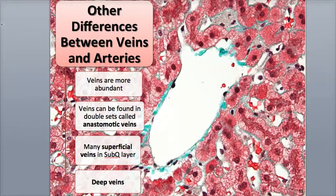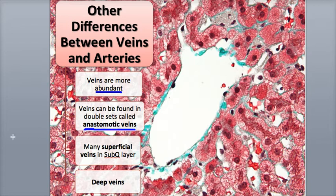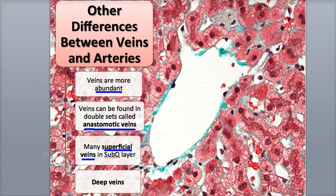Besides their structural differences, veins differ from arteries in other ways. Veins are more abundant than arteries, because some veins are paired up together alongside arteries, especially in the arms and legs. These double sets of veins are called the anastomotic veins and are connected to each other through channels that give the veins a ladder-like appearance. There are also many veins in the subcutaneous layer under the dermis of the skin, called the superficial veins, which move through the sub-Q adipose tissue. The superficial veins also connect and form anastomoses with deep veins that are located in between the skeletal muscles.